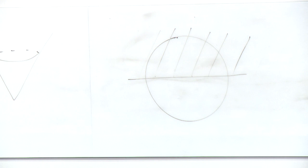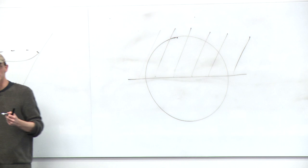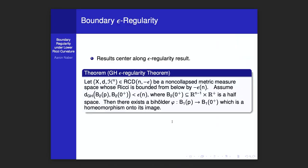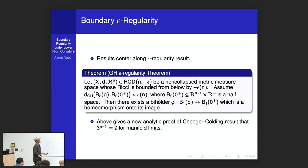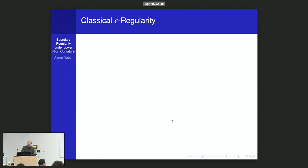Points in the top stratum S^{n-1} are those where tangent cones are n minus 1 symmetric — they must be half spaces. Every point of that stratum has a homeomorphic piece nearby. This also gives an analytic proof that manifold limits without boundary cannot have boundary. The classical epsilon regularity for the regular set works analogously: if a ball is close to a ball in Rn (not a half space), then it is homeomorphic to a ball in Rn.